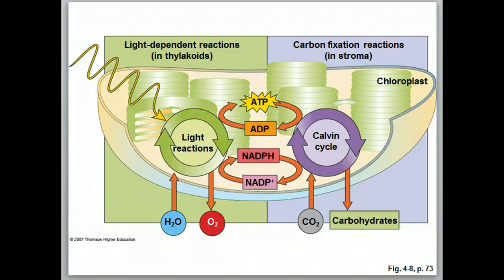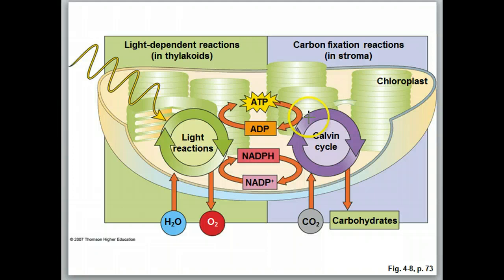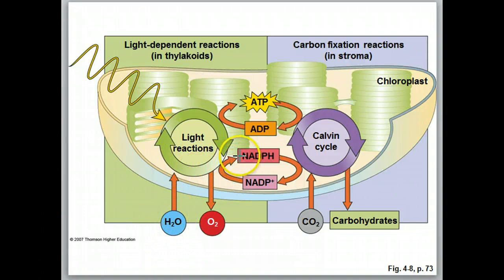Linking these two stages, the light-dependent reaction and the Calvin cycle, we've got the ADP-ATP cycle. The ADP picks up energy from the light energy to attach that third phosphate and forms ATP, and ATP is going to provide the energy to drive the Calvin cycle. We also have our hydrogen carrier NADP, and NADP is going to pick up a hydrogen from the light-dependent reaction — that hydrogen comes from water — transport it over to the Calvin cycle, where that hydrogen ultimately becomes part of the hydrogens in the carbohydrates.